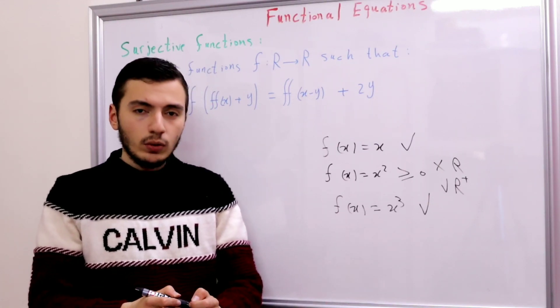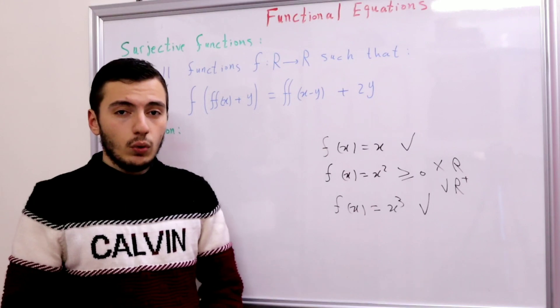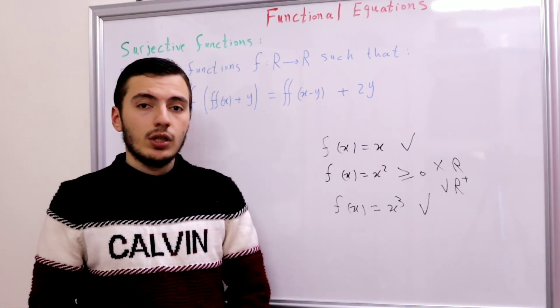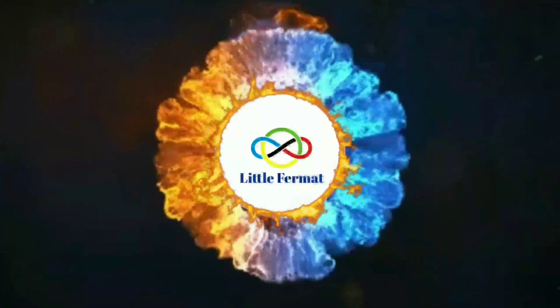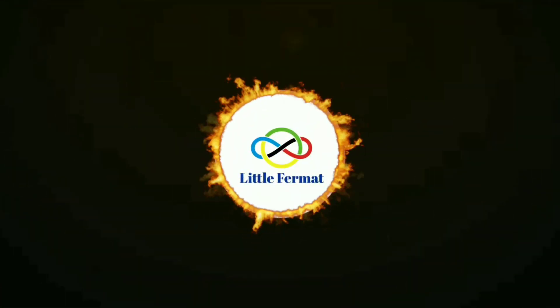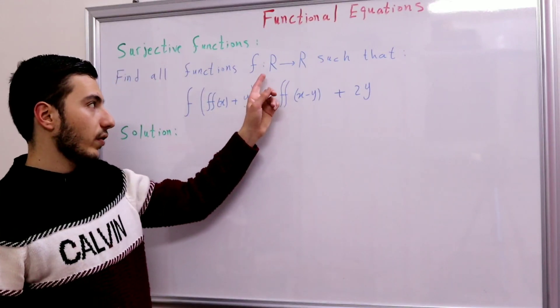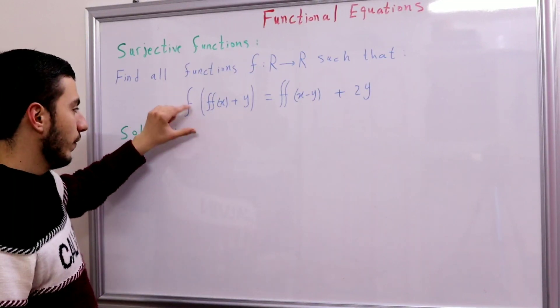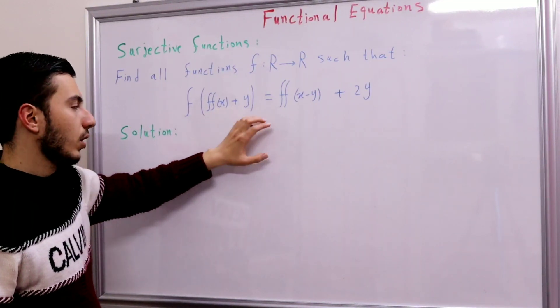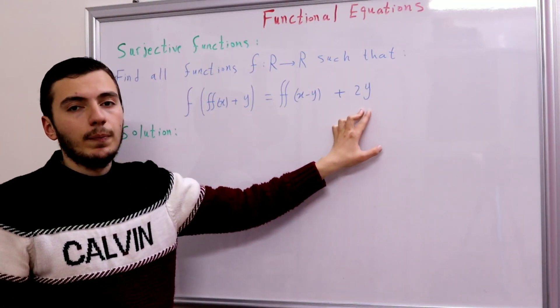Now let's take an example in which we will discuss the subjective function or the subjectivity principle. In this problem we're asked to find all functions f from R to R such that we have the following functional equation: f(f(f(x+y))) = f(f(x−y)) + 2y.